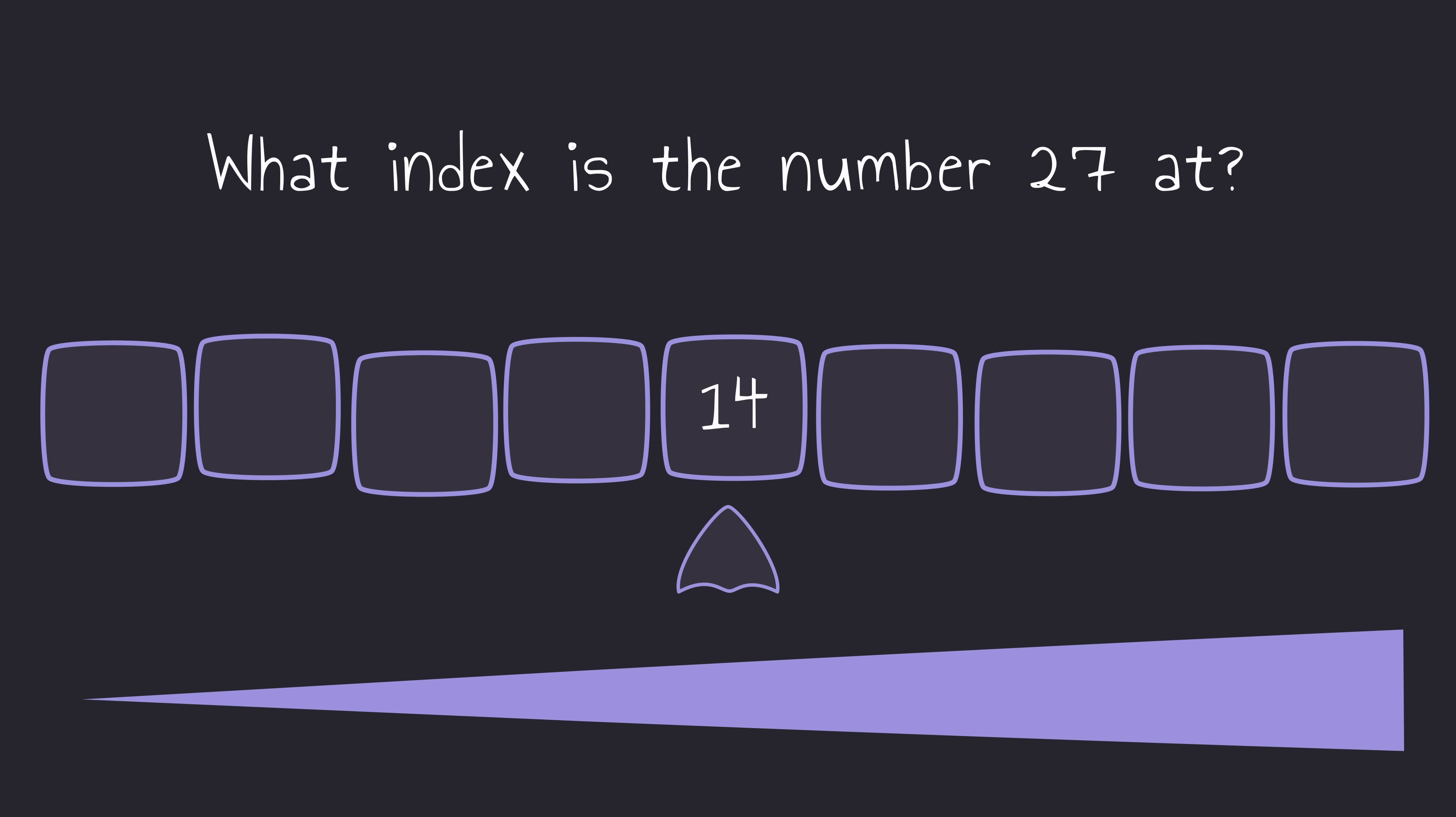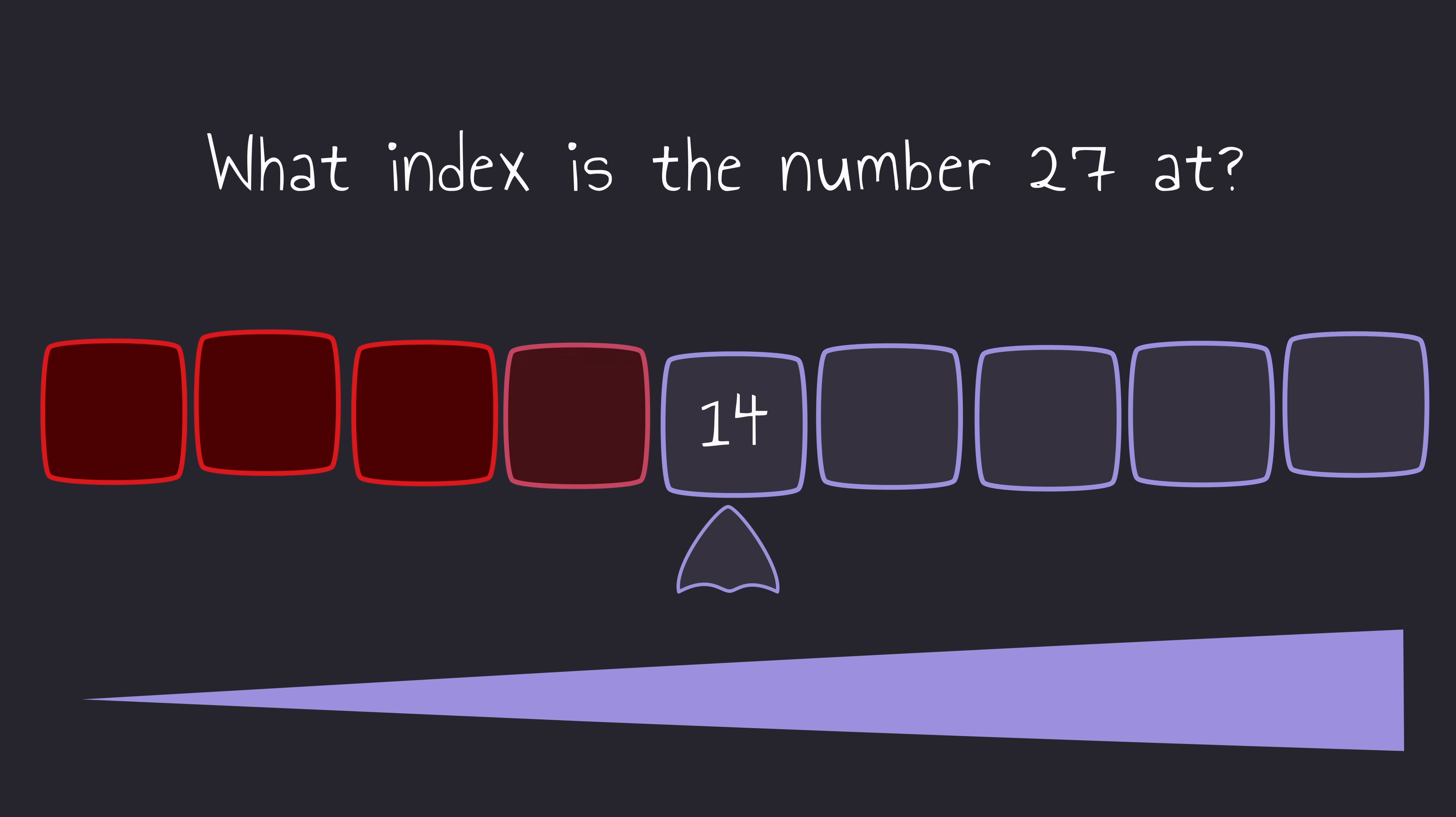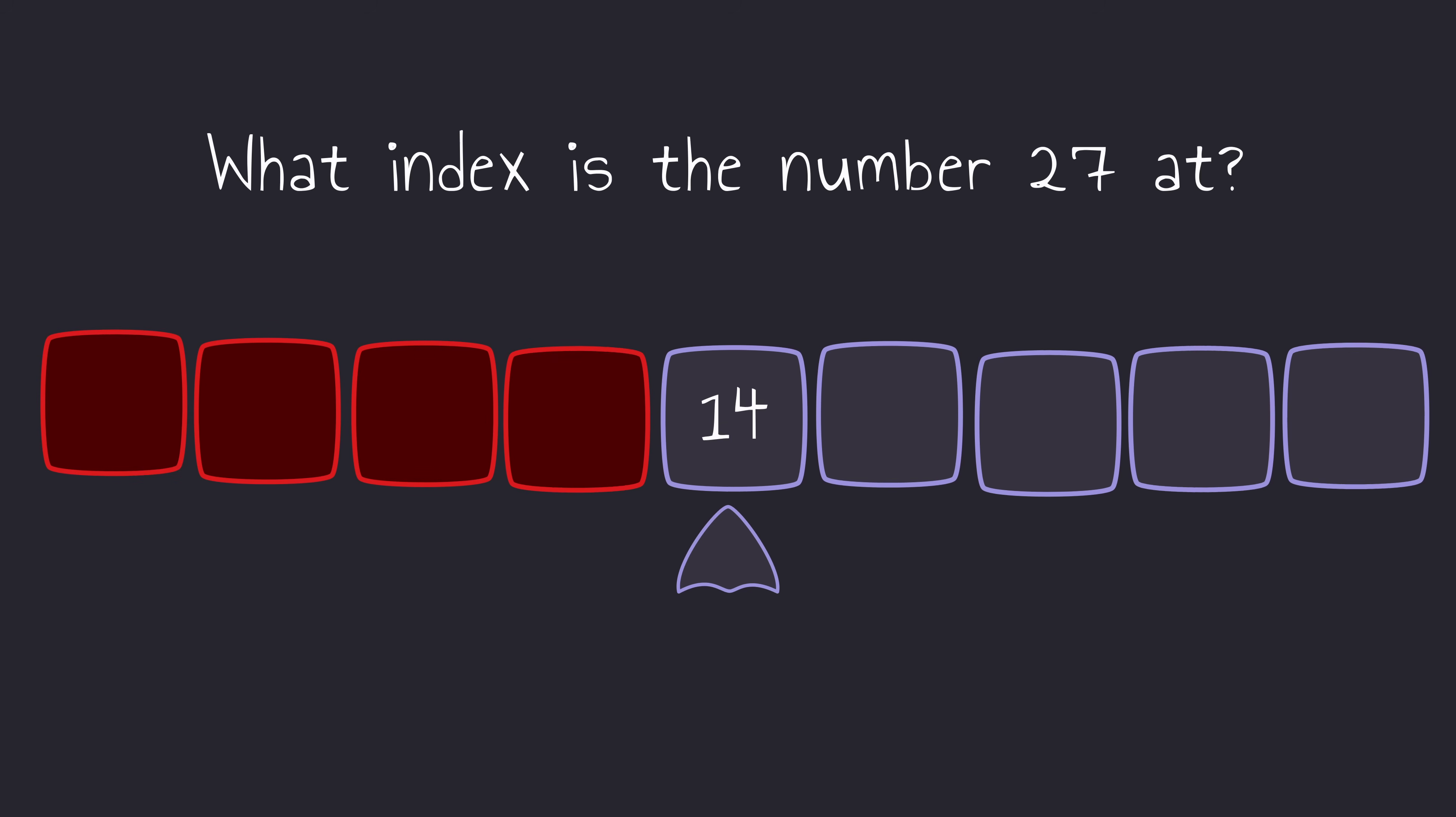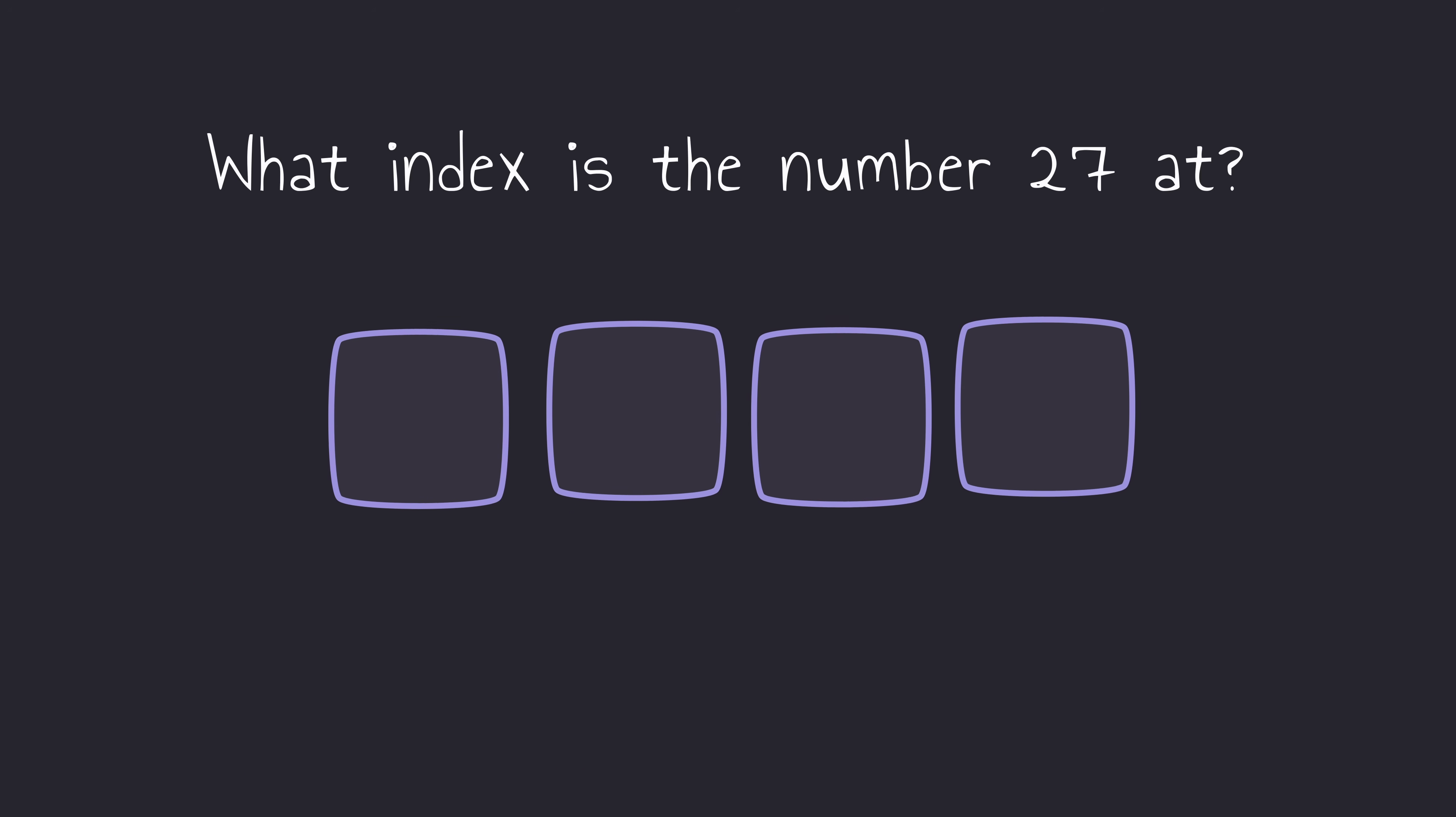Because we know the array is in a sorted order, then we know that the number 27 isn't going to be in the first half of the array, so we can just discard it. Great. By doing this, we've managed to reduce the number of indexes we need to take a look at by half. Now we can start our scan. But wait. Rather than scanning through all of these elements, what if we just do the same thing again? Let's go ahead and jump to the middle.